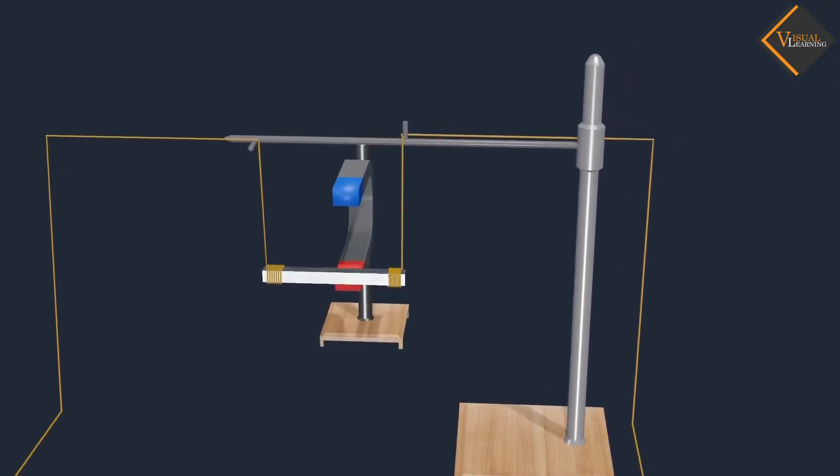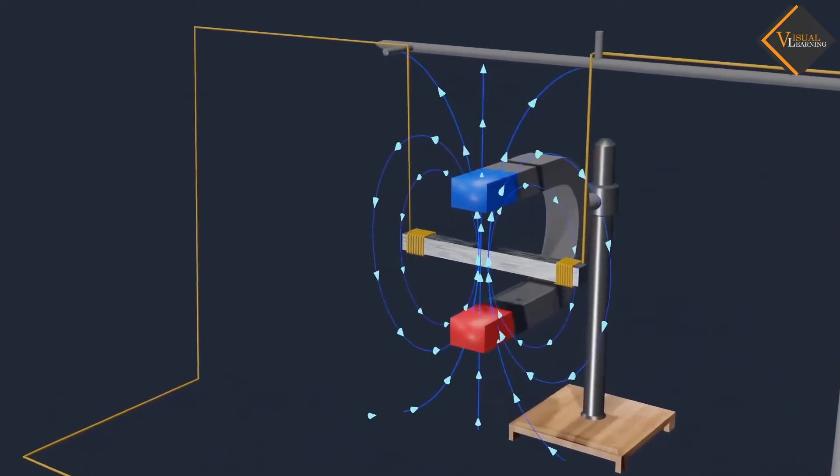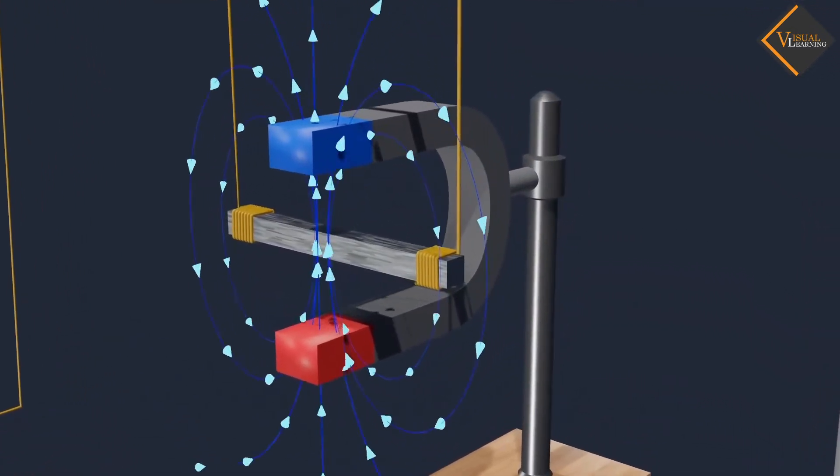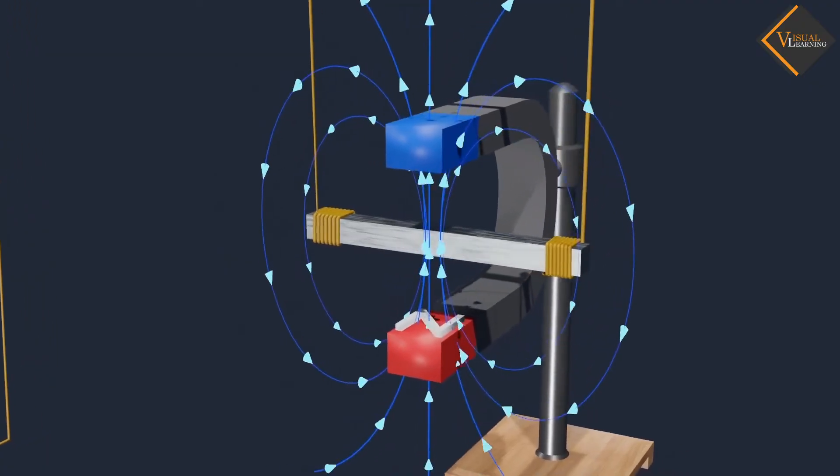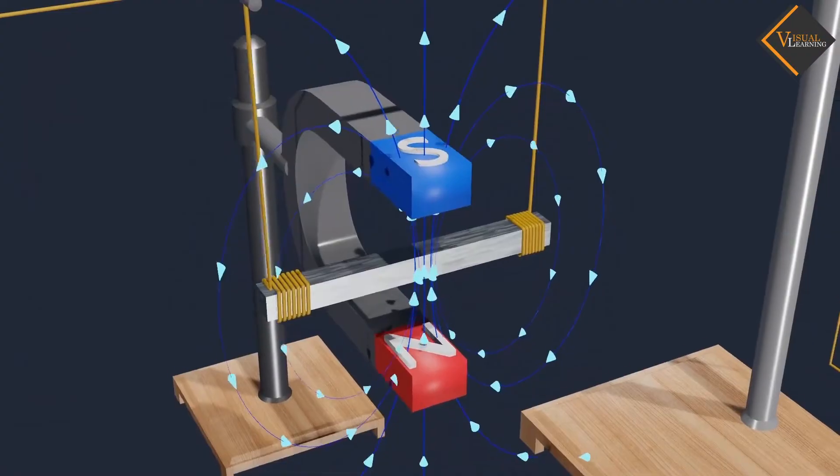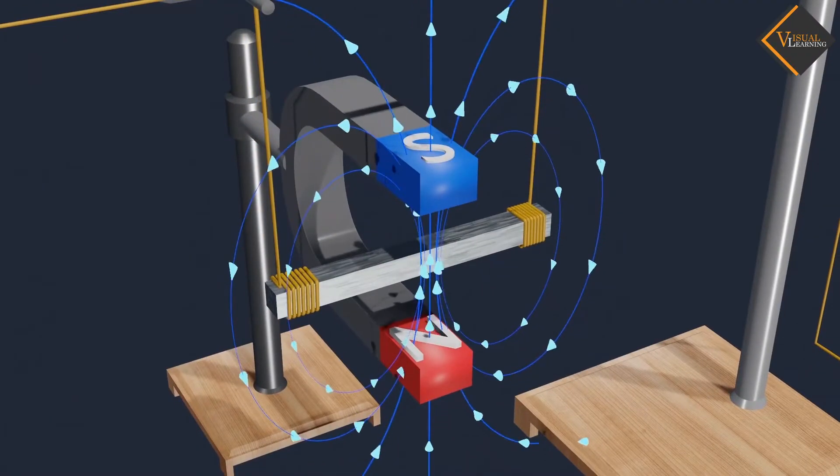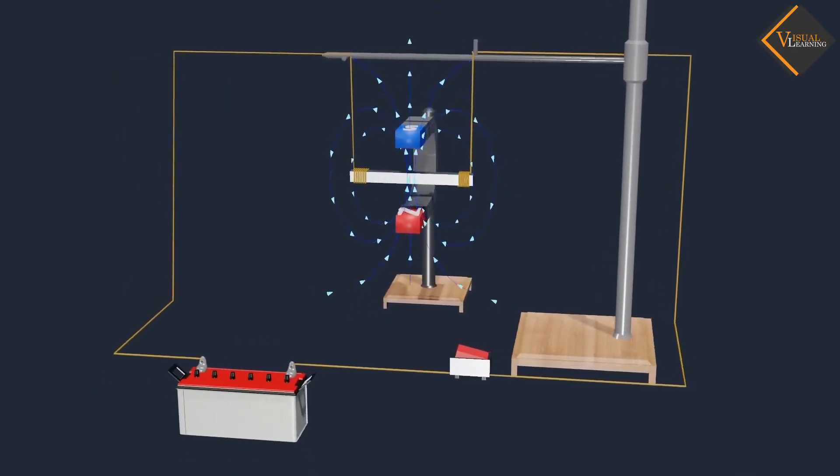Place a strong horseshoe magnet in such a way that the rod lies between the two poles with the magnetic field directed upwards. For this, put the north pole of the magnet vertically below and south pole vertically above the aluminium rod. Connect the aluminium rod in series with a battery and a key.